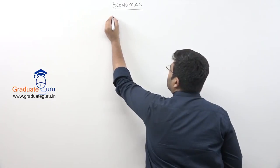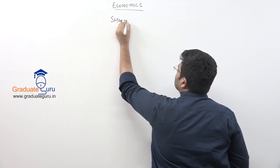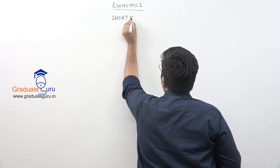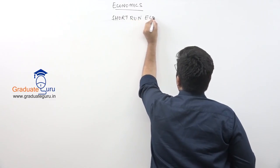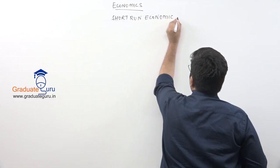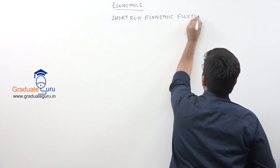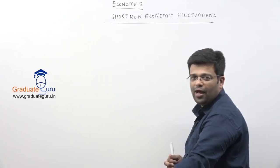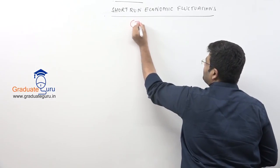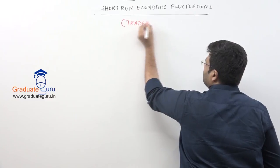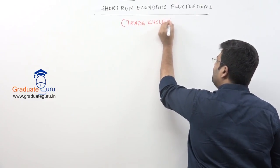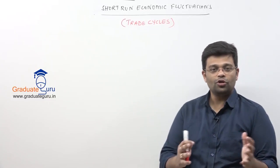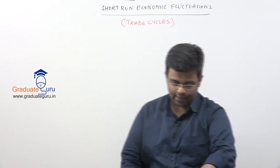Today, we are going to start with a topic called short run economic fluctuations. You know, all these names are just too scary. In simple language, this could have also been called trade cycles. So the topic that we are beginning today is going to be called trade cycles.